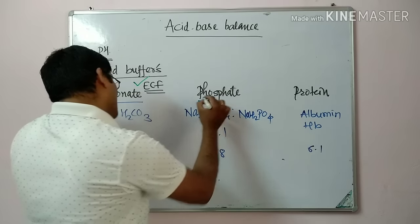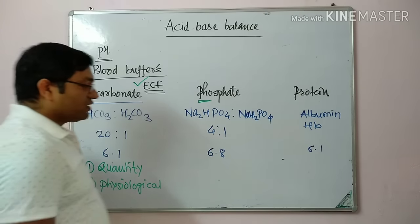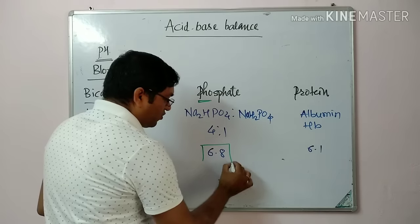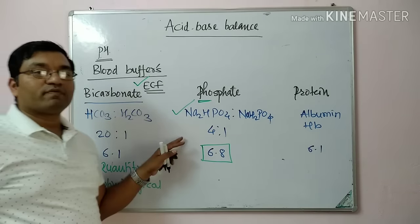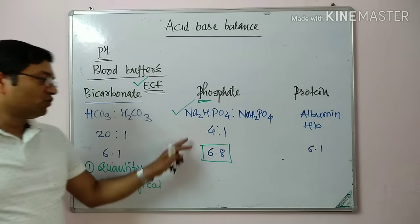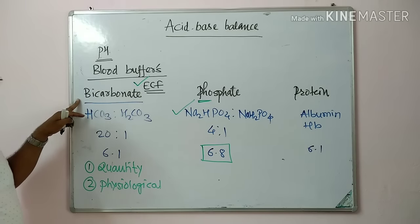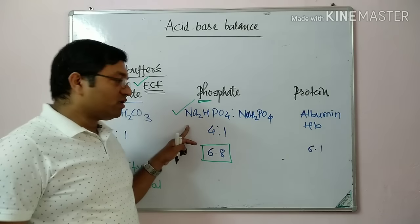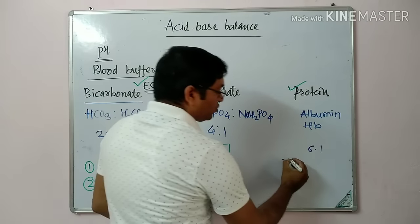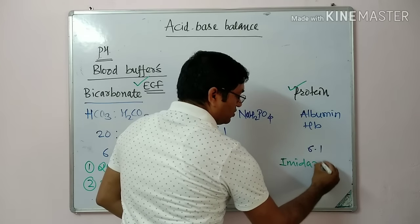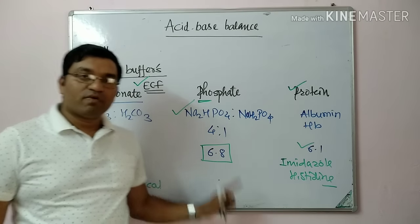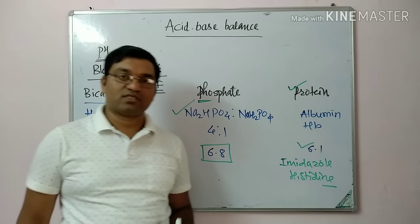The phosphate buffer is active over a wide range because it has three pKa values. Its pKa of 6.8 is closest to physiological pH of 7.4, making it the most potent buffer in the intracellular environment. So for MCQ purposes: in extracellular fluid the most important buffer is bicarbonate; intracellularly, the phosphate buffer is most important. The protein buffer acts mainly through the imidazole group of histidine, with a pKa of 6.1.